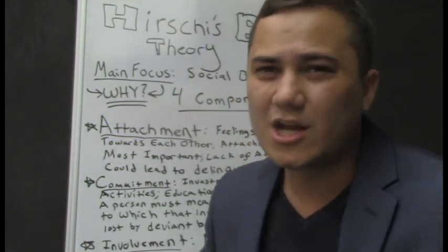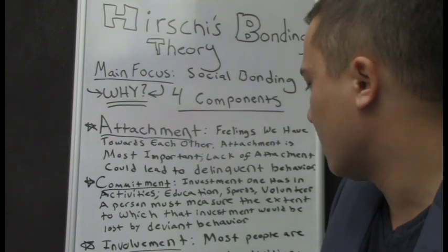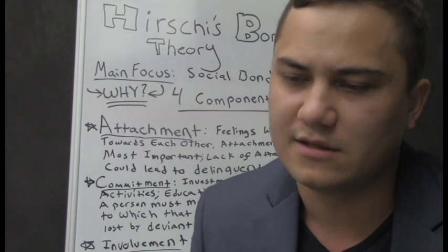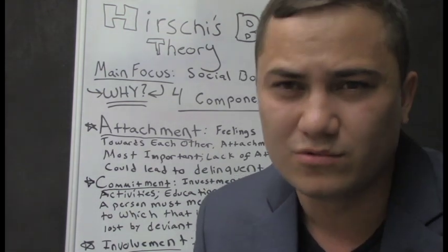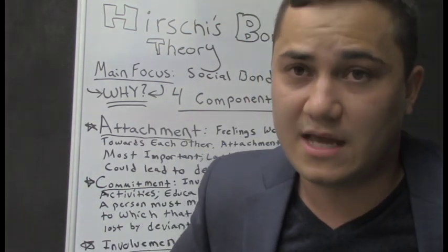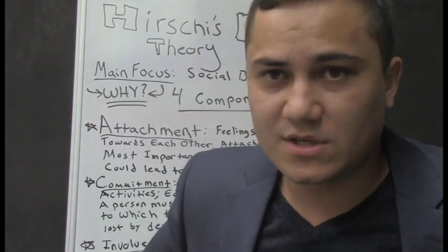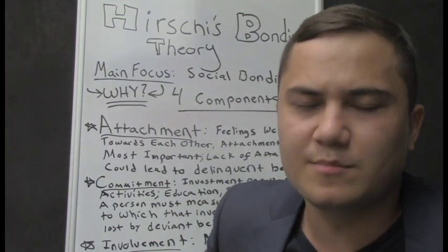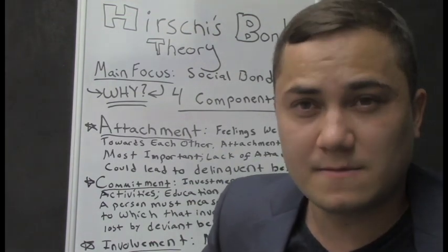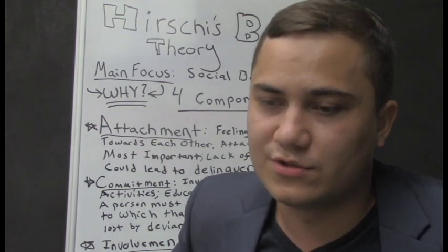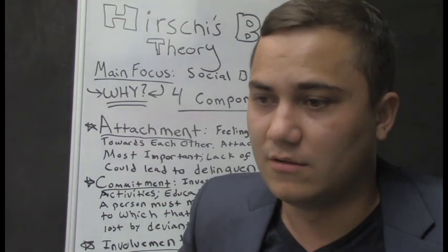Last but not least, our fourth component is belief. In a nutshell, a person accepts society's norms in terms of law and rules. Belief is supposed to help adolescents know that if you take something from a store, that's a crime, that's not allowed. The lack of belief could lead them to resort to crime when they get older.